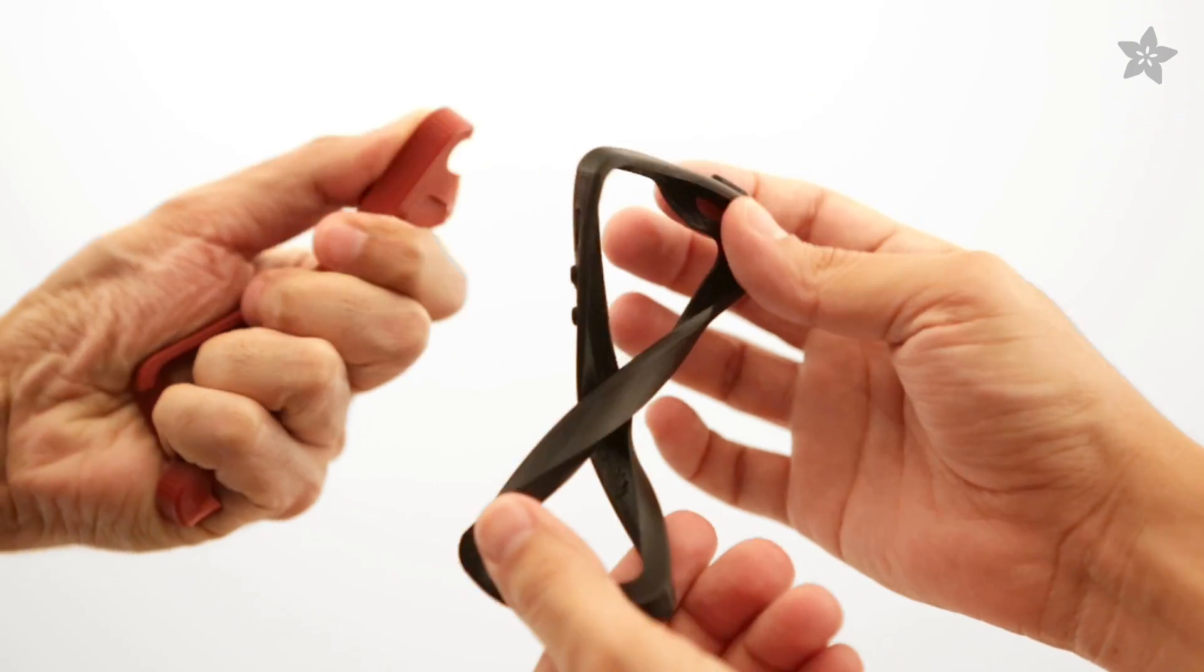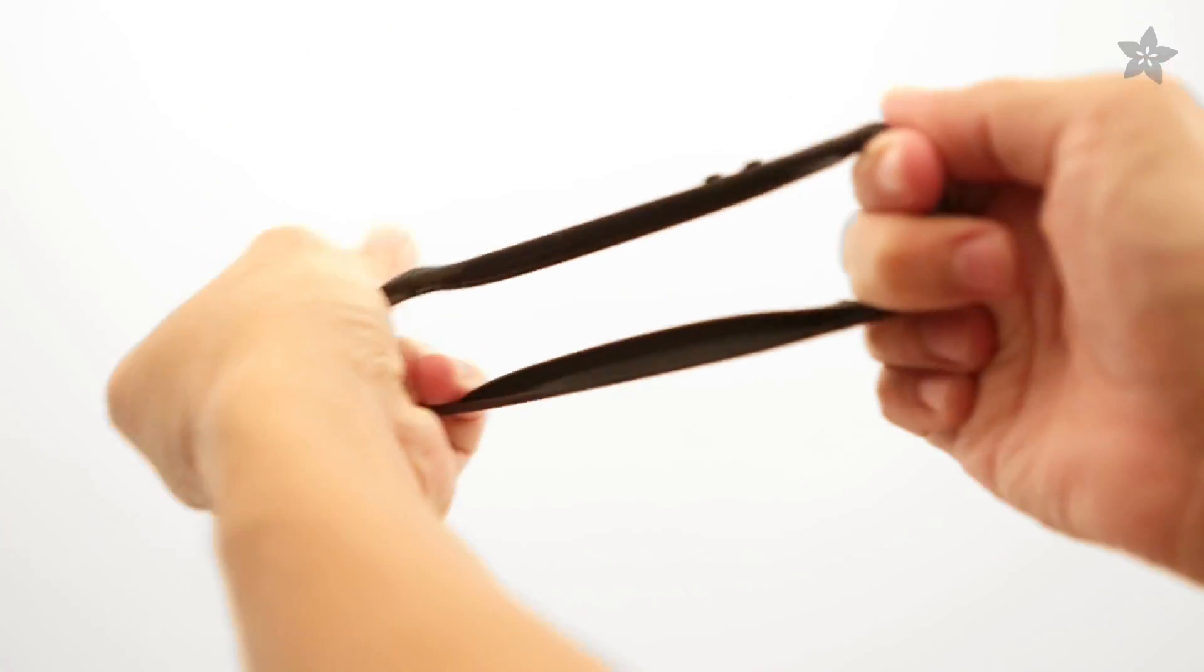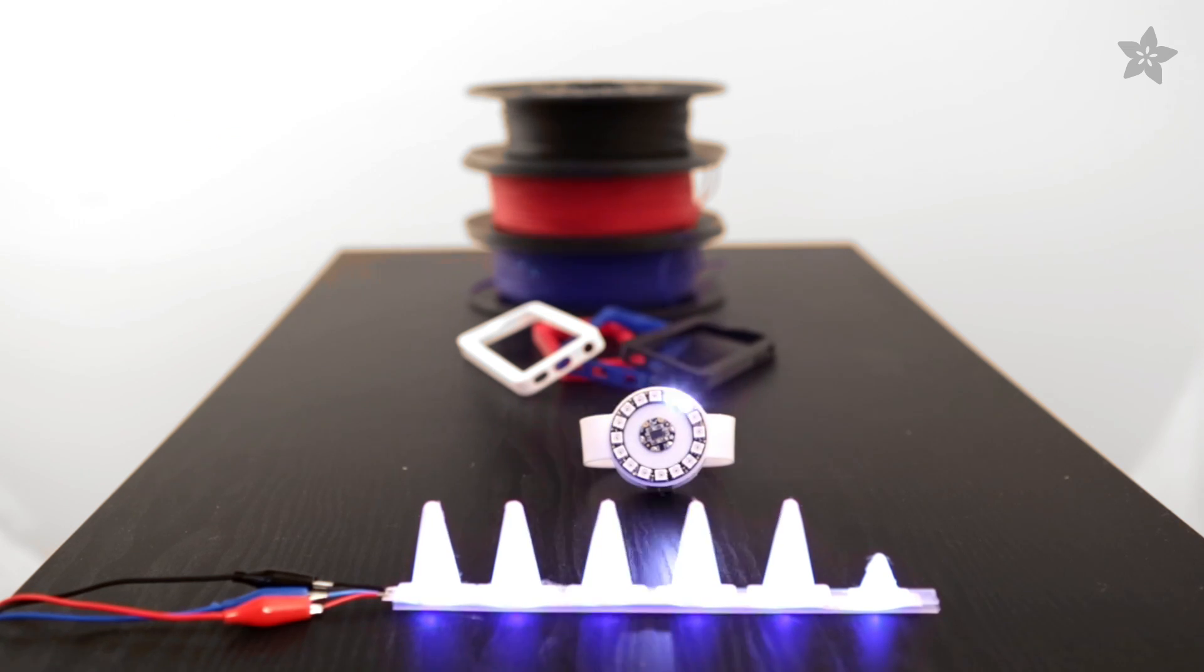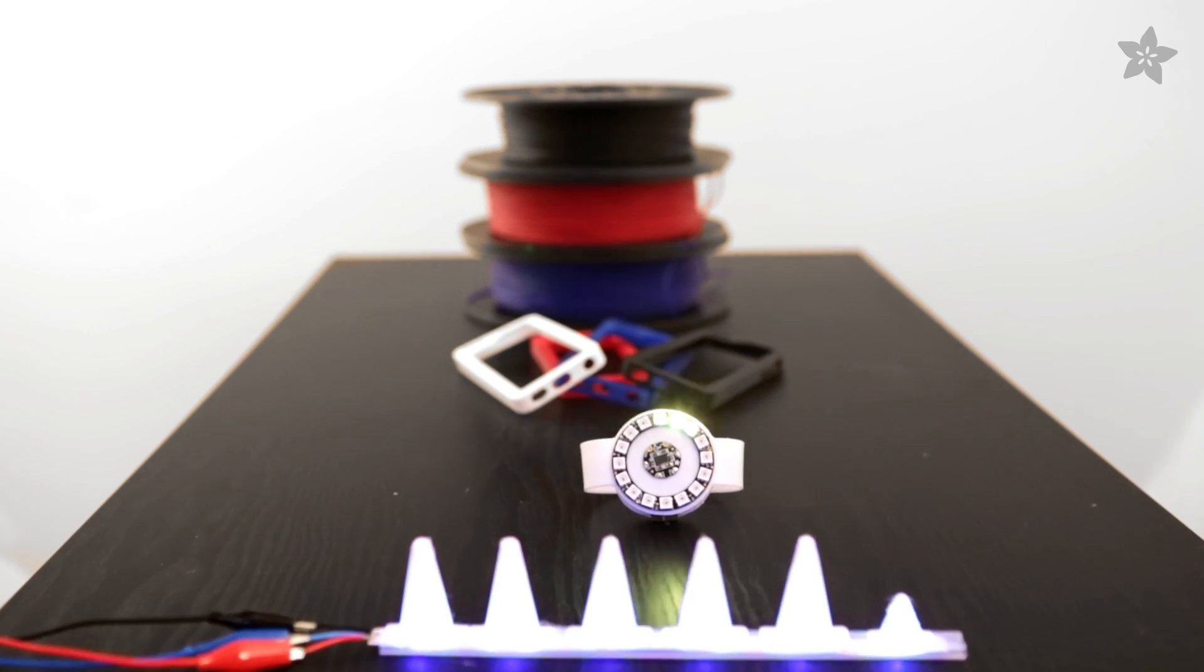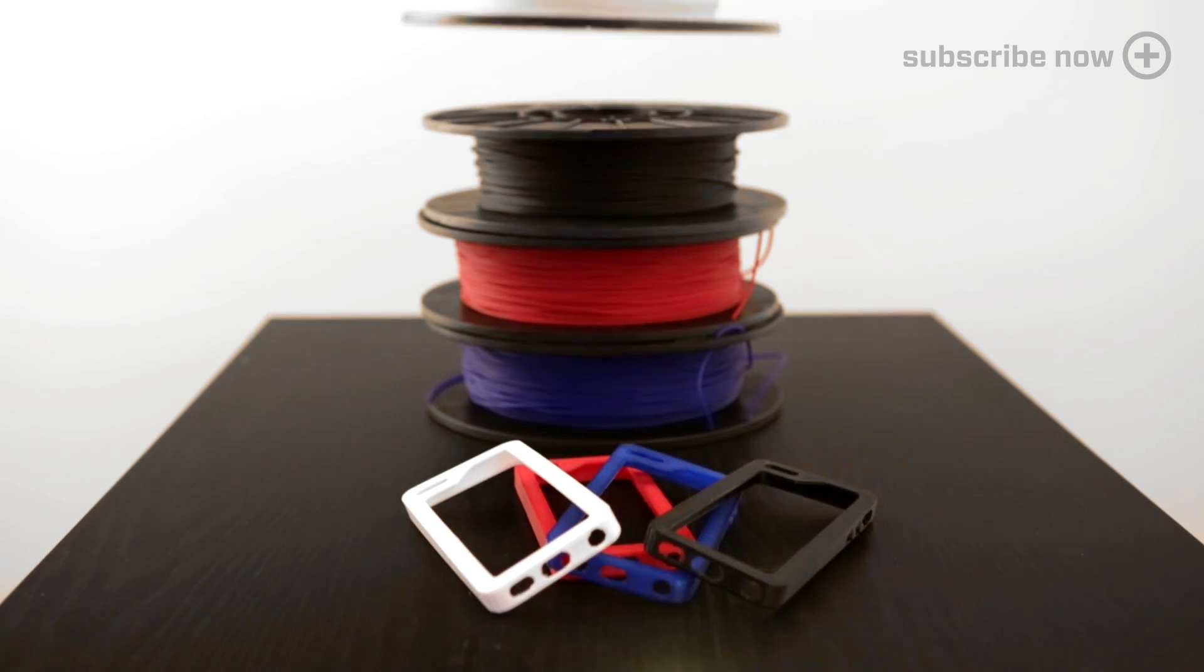Tired of printing in ABS and PLA? Print your next creation in flexible material with NinjaFlex. This TPE material works great with wearables like these NeoPixel diffusers, our flora wristband, and our iPhone bumpers.